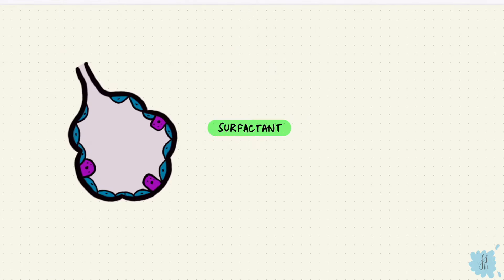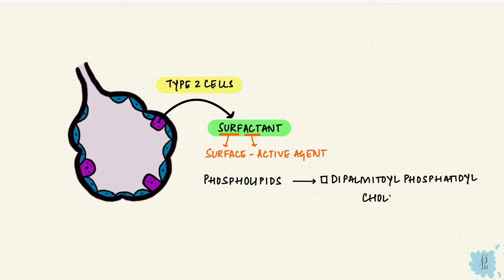Surfactant is produced by type 2 alveolar epithelial cells, and it's a surface active agent. Its production starts later in gestation, around 24 weeks, and its main components are phospholipids, particularly dipalmitoyl phosphatidylcholine, which is also called lecithin, or DPPC.